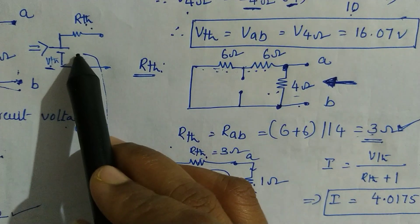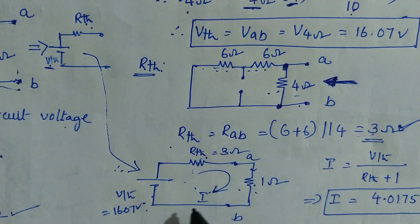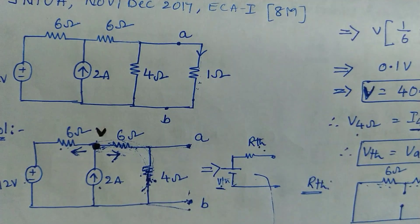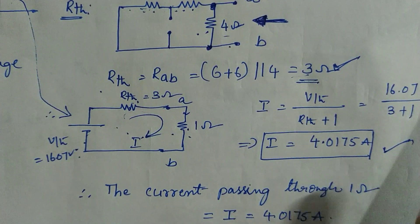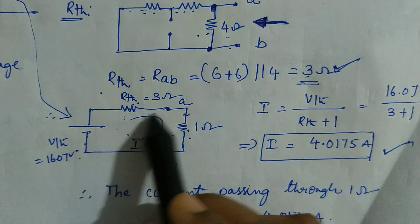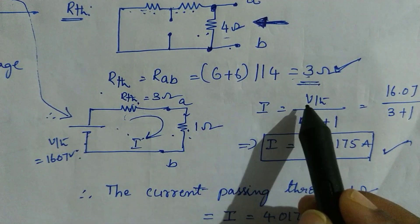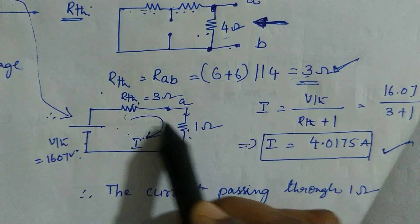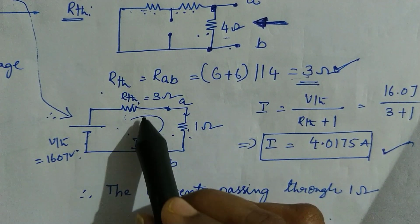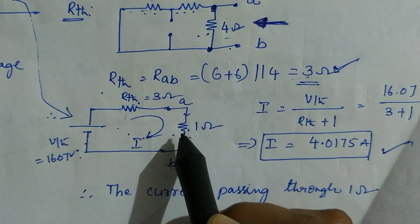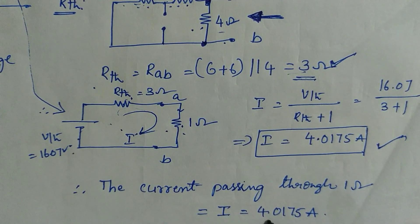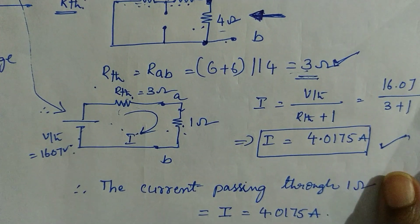This is the Thevenin equivalent circuit with the calculated values. You had disconnected the 1 ohm resistor, so now connect this 1 ohm resistor in the equivalent circuit. We observe a simple loop. Applying Ohm's law: I equals V Thevenin divided by R Thevenin plus 1, since both are connected in series. The current flowing through the 1 ohm resistor is our I, which equals 4.075 ampere. This is how we do the problem.